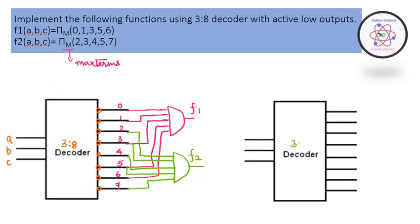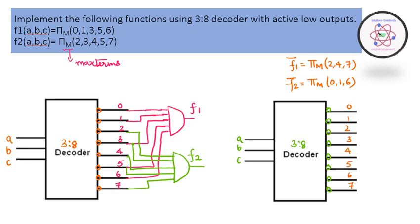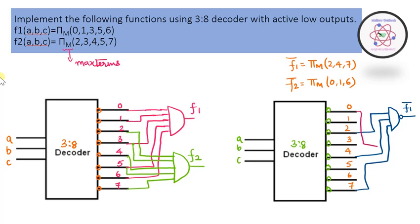Similar to how we replaced the OR gate with a NOR gate for min term implementation, for max term implementation we can replace the AND gate with a NAND gate. We implement the complement of the function using a NAND gate. For F1, the complement can be implemented as summation m(2, 4, 7), and for F2-complement, it equals summation m(0, 1, 6).